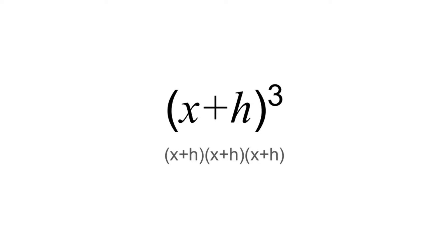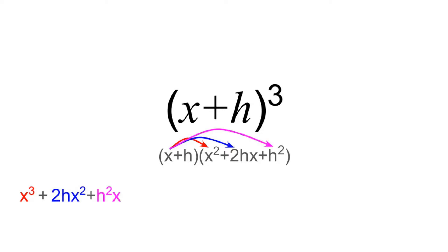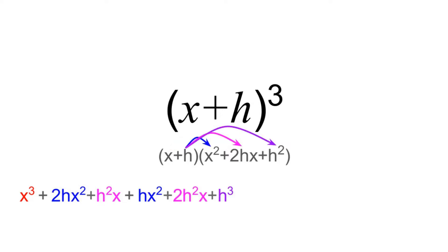What if we look at the higher power: x plus h times x plus h times x plus h? We can save ourselves some work by writing this as x plus h times (x plus h) squared — that is, x plus h times the trinomial x squared plus 2hx plus h squared. Multiplying it out: x times x squared is x cubed, x times 2hx is 2hx squared, x times h squared is h squared x. Repeating this by multiplying through by h gives three more terms. Combining like terms, we get x cubed plus 3hx squared plus 3h squared x plus h cubed.